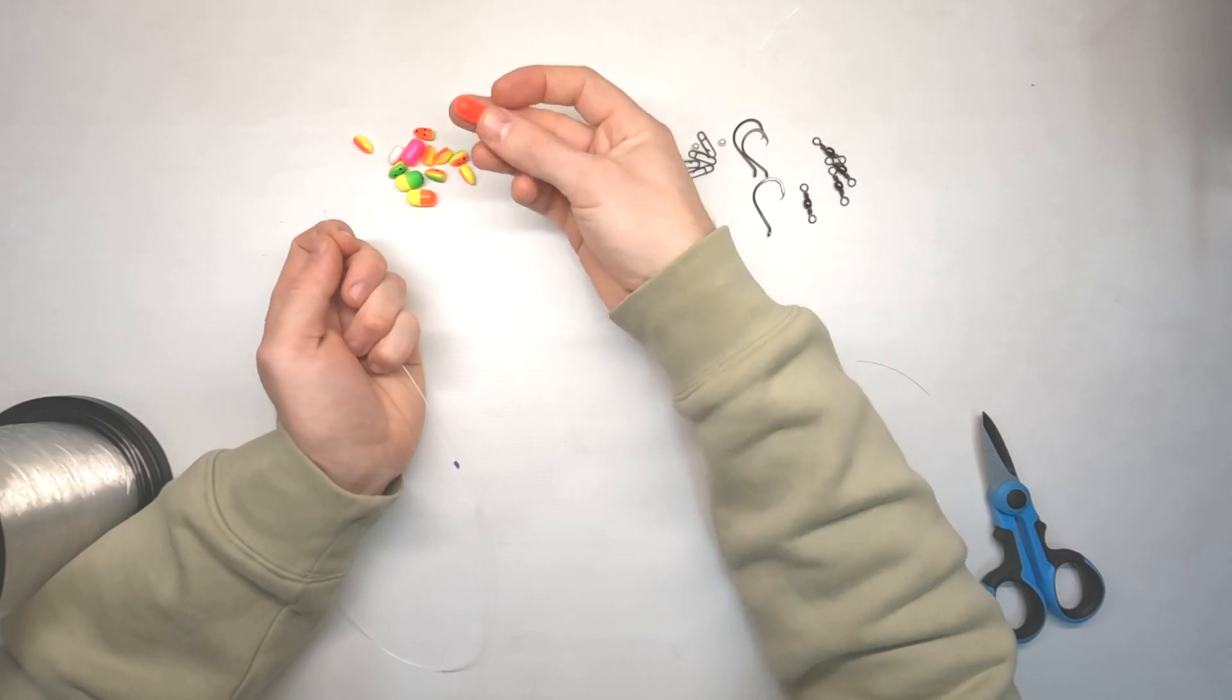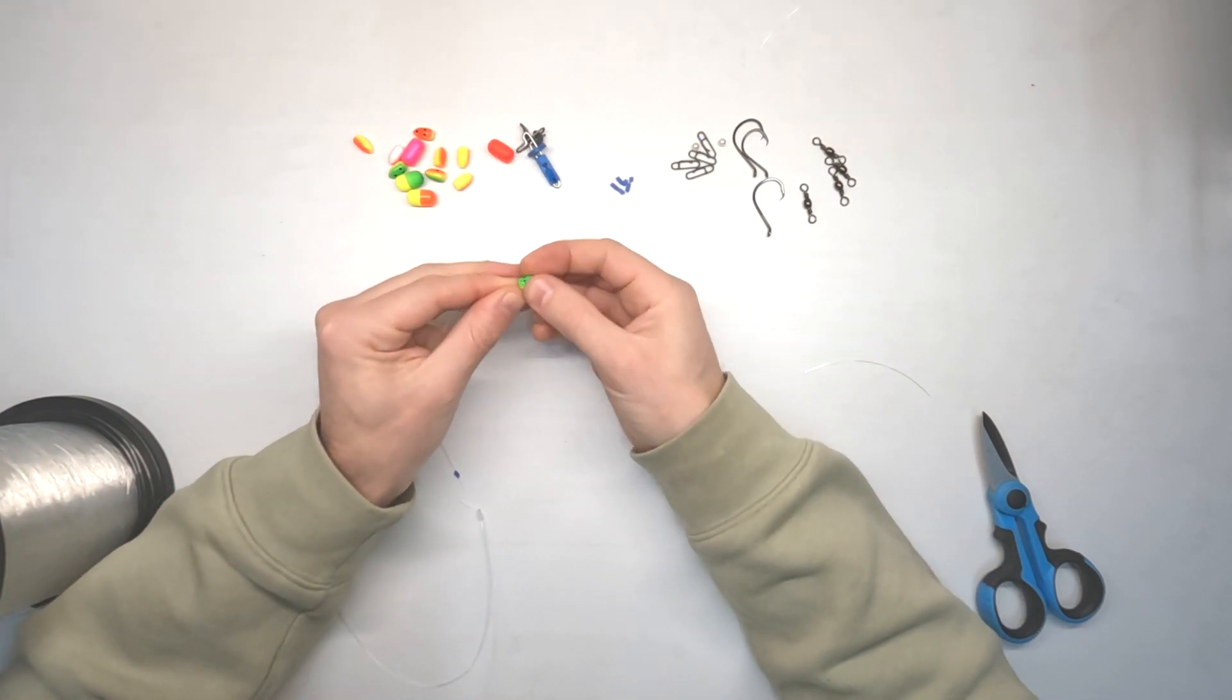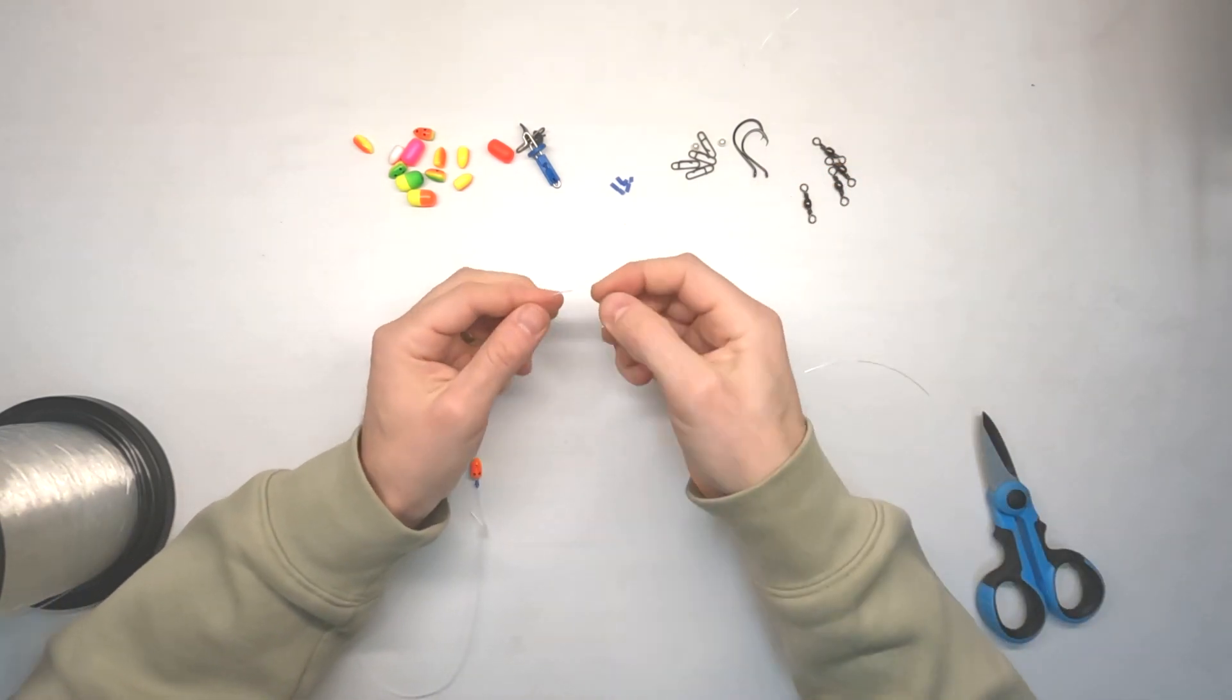Pull that tight and now you've got a really nice little silicon knot that you can slide up and down on your line. Now what that's great for is if you're using float beads like so, or like so.